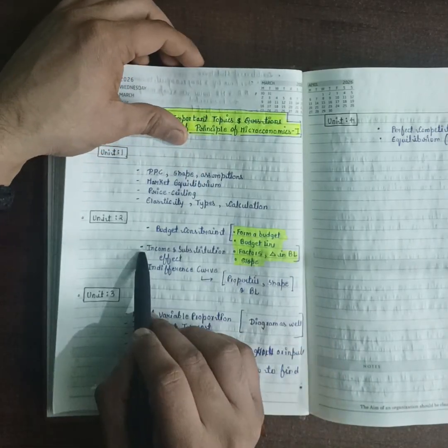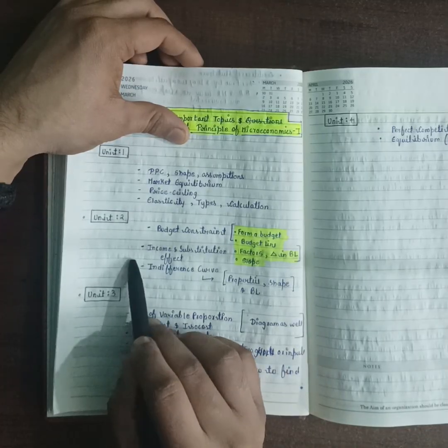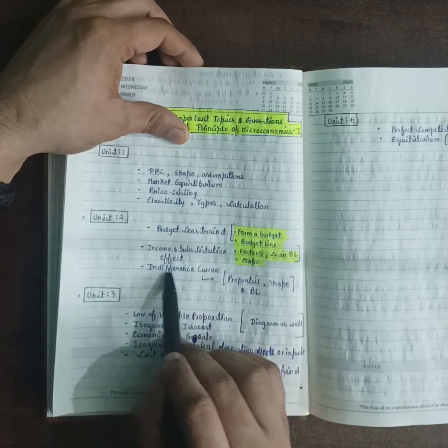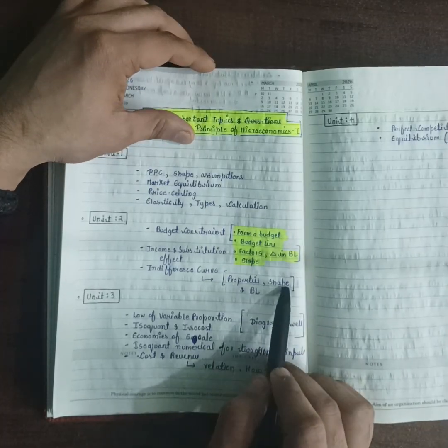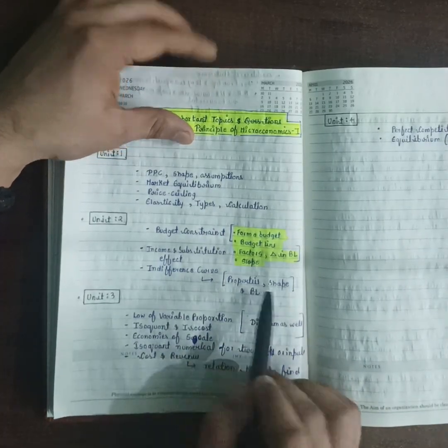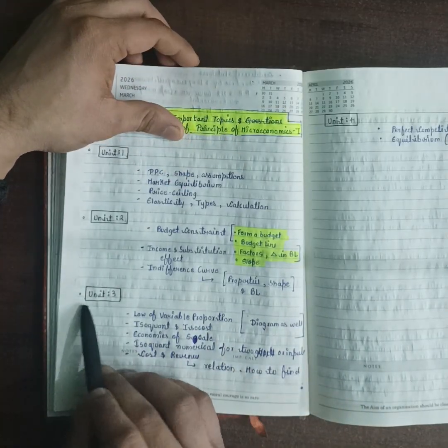Second is income and substitution effect - very, very important. Third is indifference curve - very important, absolutely coming in your examination. Within indifference curve, for being more precise, you can do properties, shape, and indifference curve and budget line together. One question can also come from indifference curve and budget line as well.